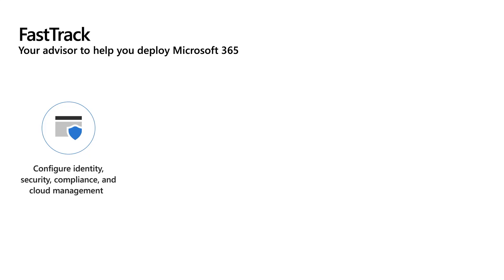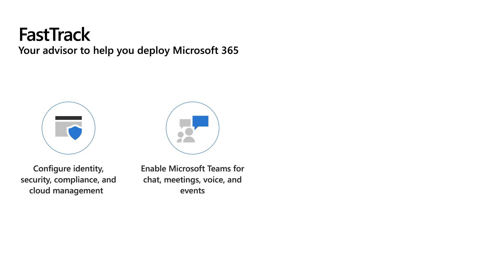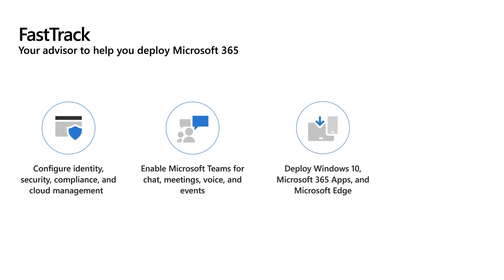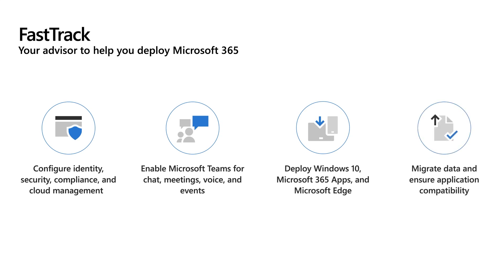FastTrack helps customers configure identity, security, compliance, and cloud management. It also helps enable Teams, including workloads chat, meetings, voice, and events, and helps guide the deployment of Windows 10, other Microsoft 365 apps, and Microsoft Edge. FastTrack also performs email and data migration, and ensures application compatibility with the App Assure service.